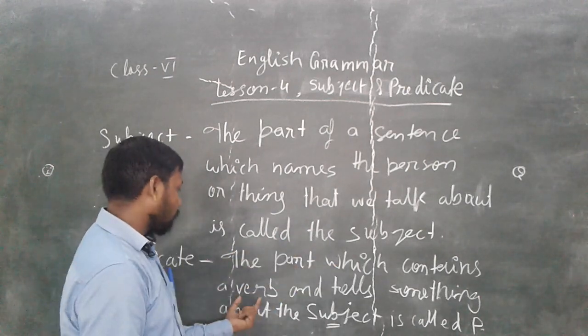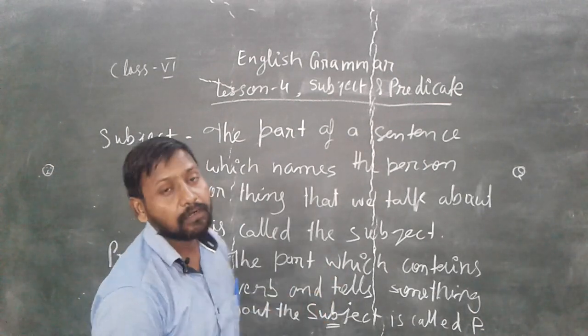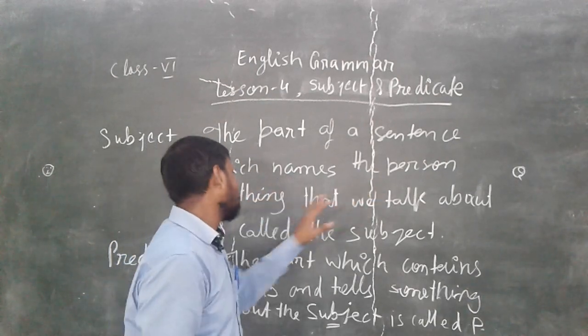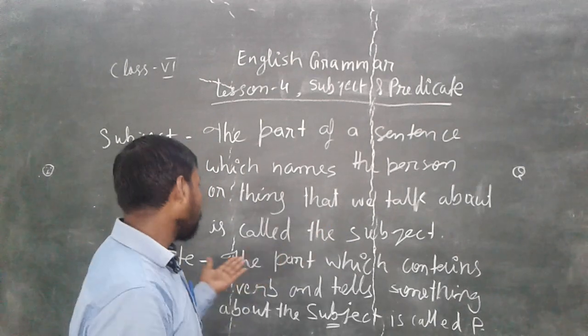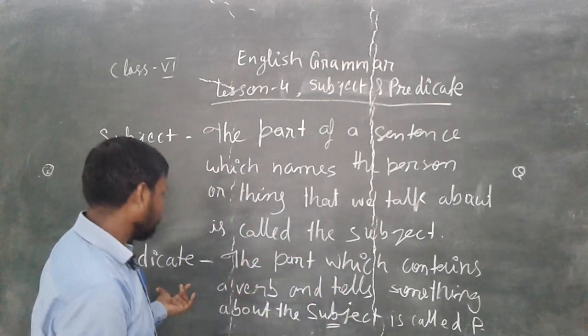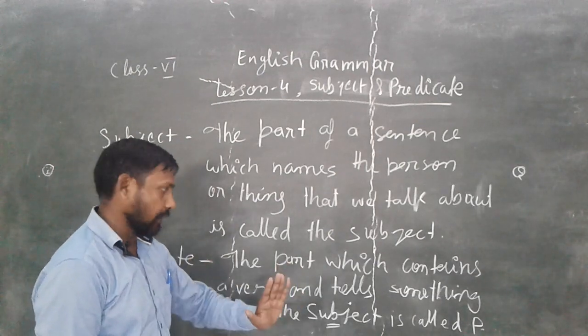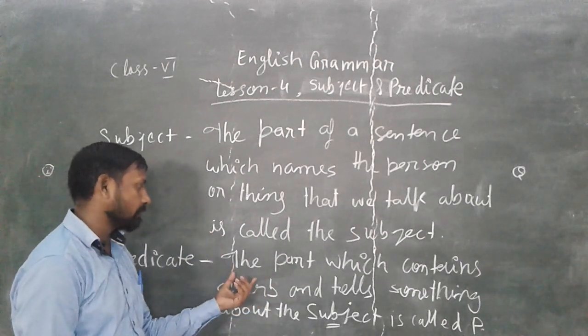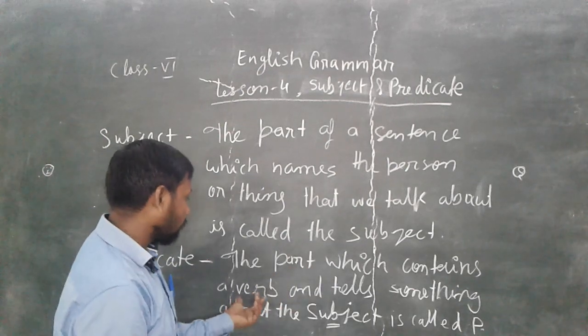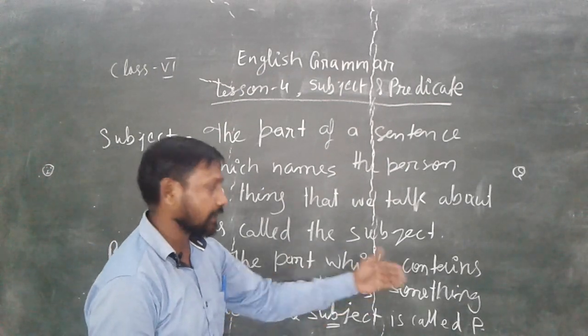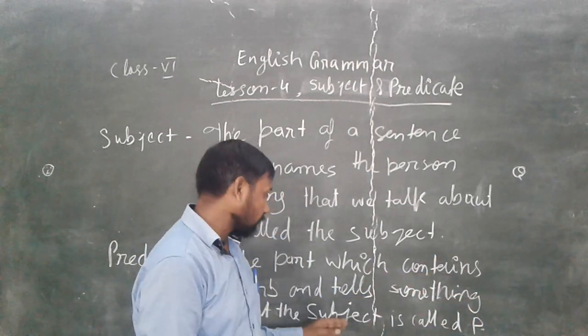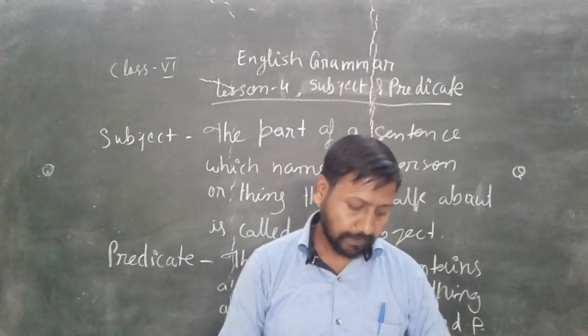The part which contains a verb and tells something about the subject is called predicate. This means predicate contains the verb or words, and tells something about the subject. This is a very simple topic.